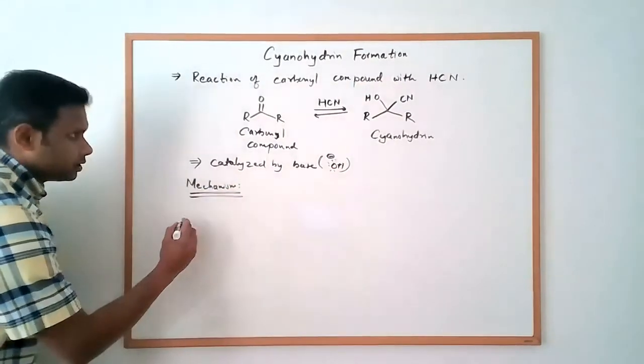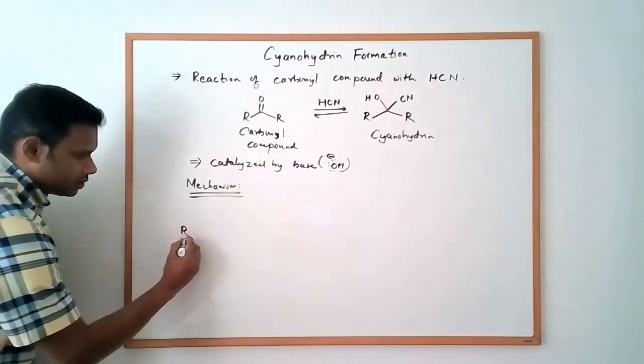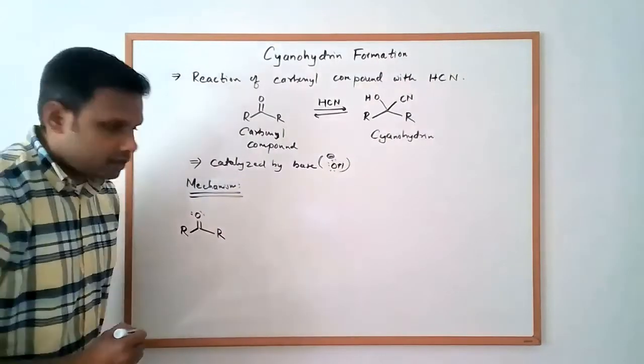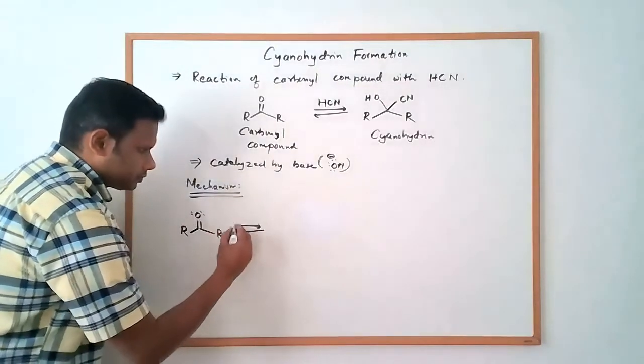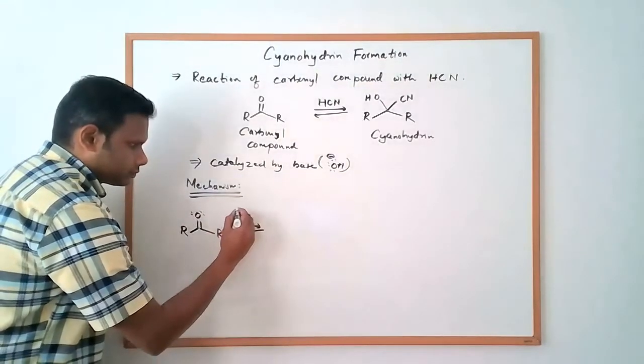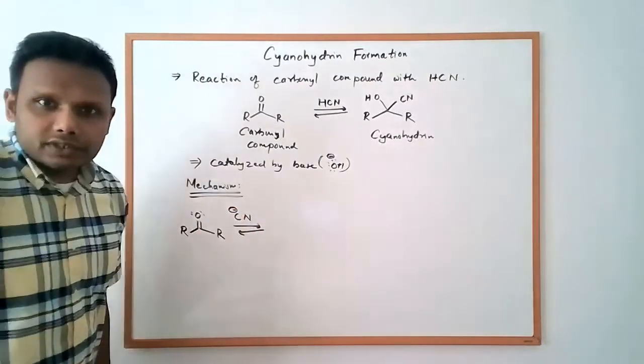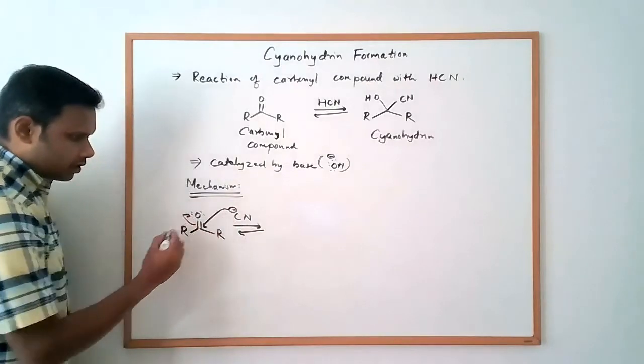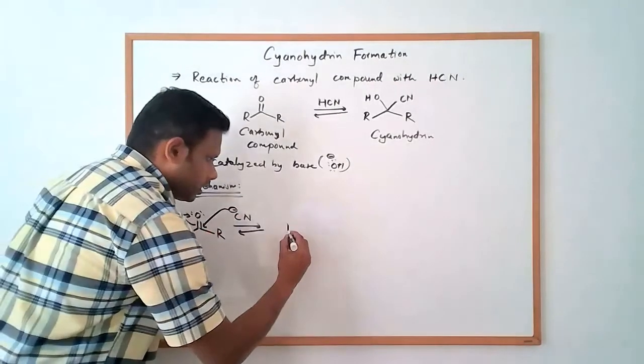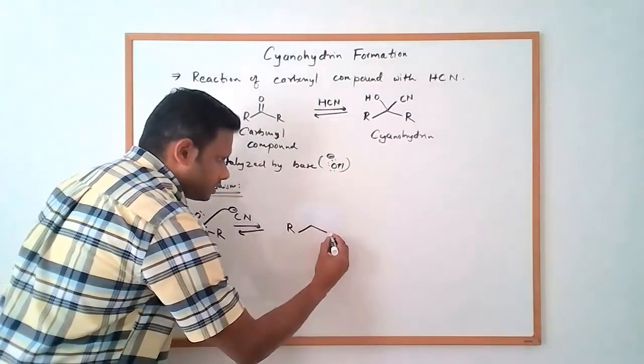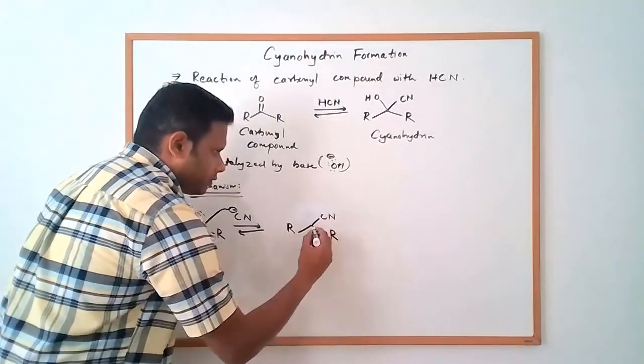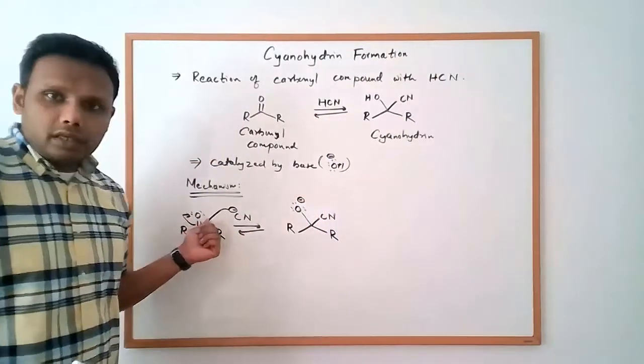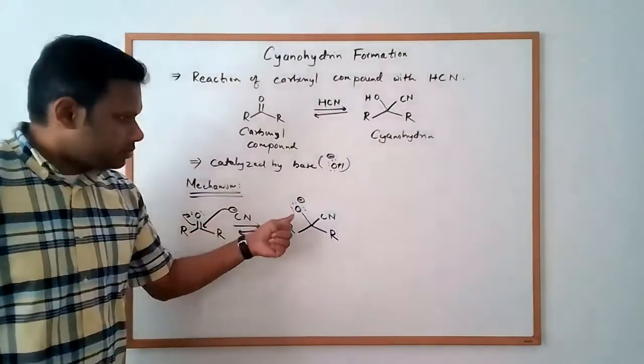And the mechanism itself is very simple. So the mechanism of the reaction involves an initial attack of cyanide. Initial attack of cyanide on the carbonyl carbon. So when the cyanide attacks the carbonyl carbon, the double bond opens up and that would give us an intermediate here where the nitrile group is now connected and we have an alkoxide. The carbonyl oxygen becomes an alkoxide.